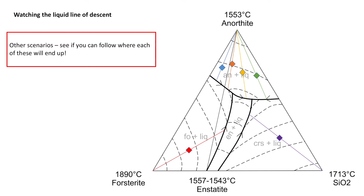The blue example: hit the cotectic, evolve, and stop at the peritectic. Orange: through the peritectic, finish at the ternary eutectic. Yellow is going to finish at that ternary eutectic. Green, in a similar way, is going to finish at that ternary eutectic. Purple also at the ternary eutectic via the cristobalite divariant field. And red is going to end at that peritectic as well.